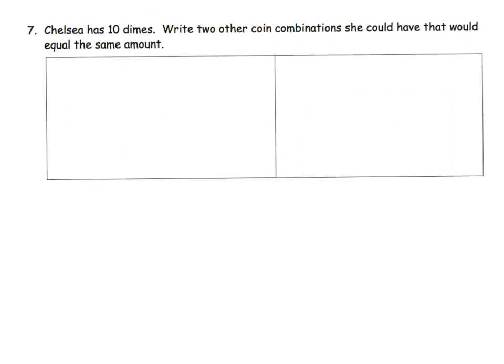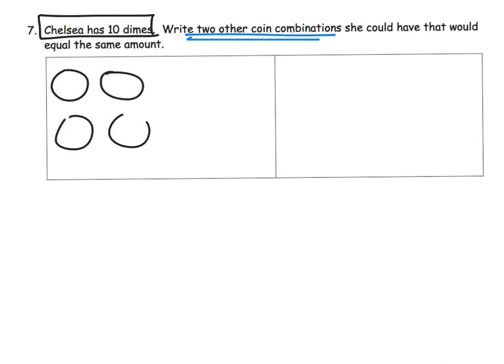The last problem for this video: Chelsea has 10 dimes. We want our students to know that's a buck, one whole dollar. Write two other coin combinations that have the exact same amount, which is a dollar. One idea could be 25 cents, you could have four quarters. So there's one way to make a buck.